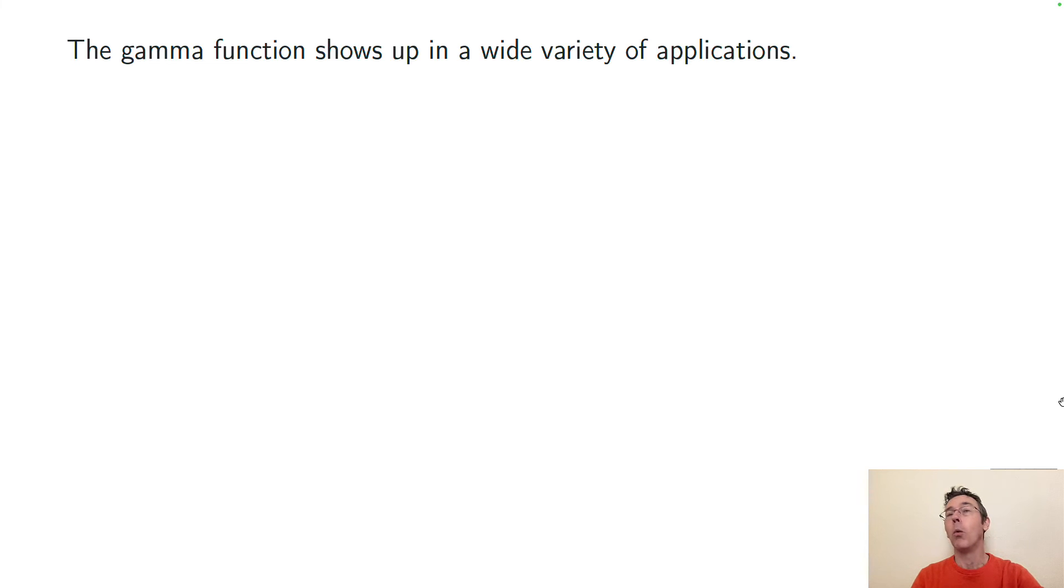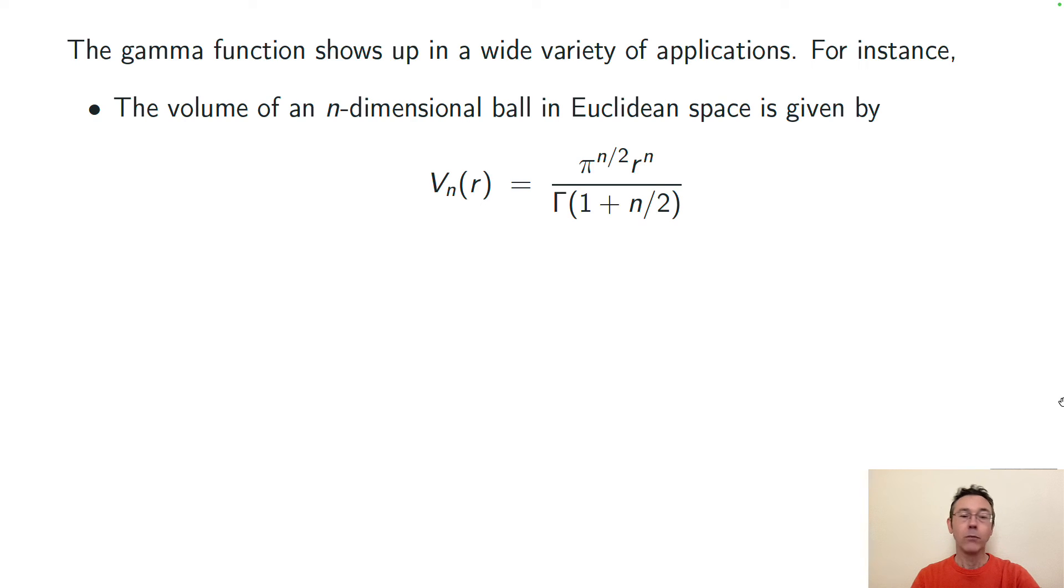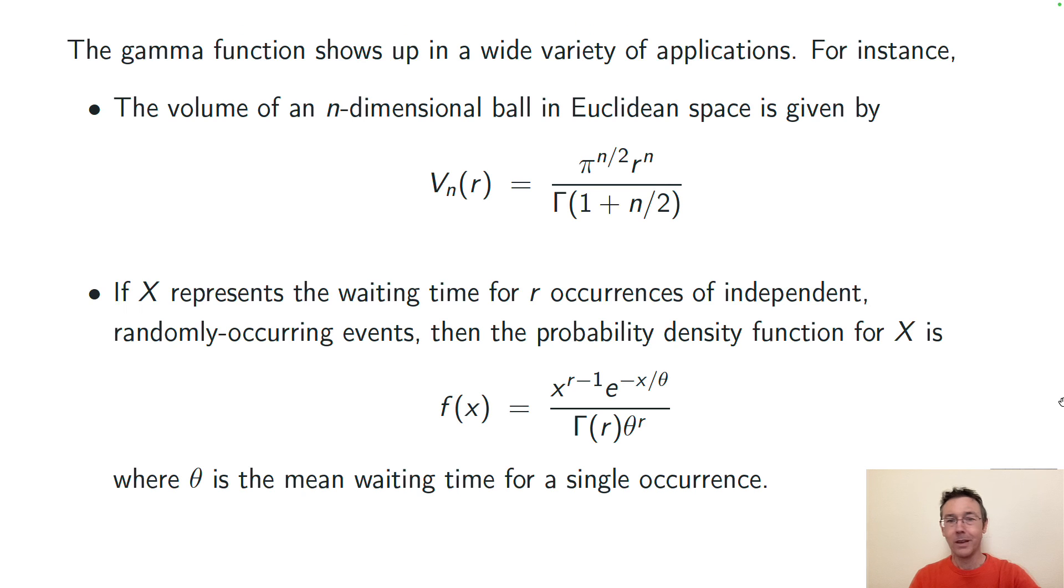The gamma function comes up in a wide variety of applications. For instance, you can compute the volume of an n-dimensional ball in Euclidean space with this formula, which uses the gamma function in the denominator. In probability and statistics, the gamma function comes up in the context of the gamma distribution, which models the waiting time needed for a certain number of independent, randomly occurring events that are all identical, like calls to a pizza place.